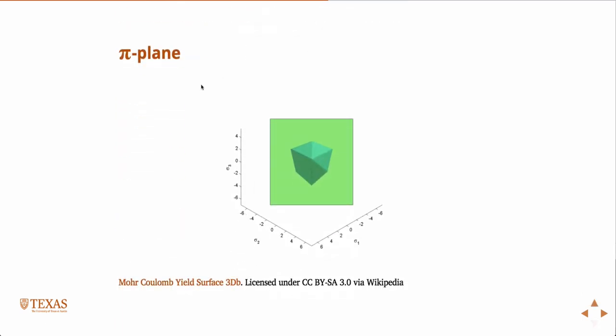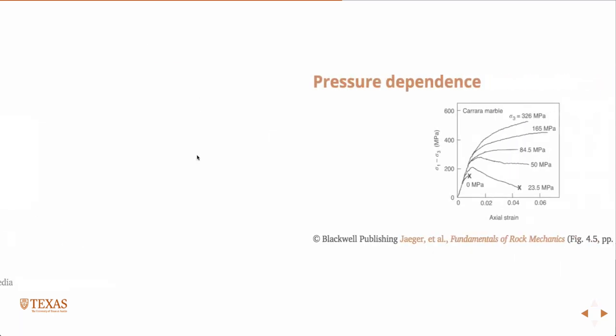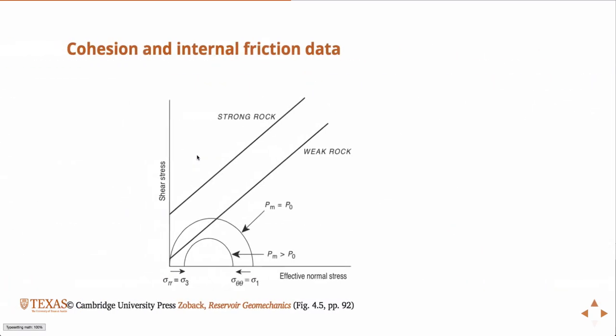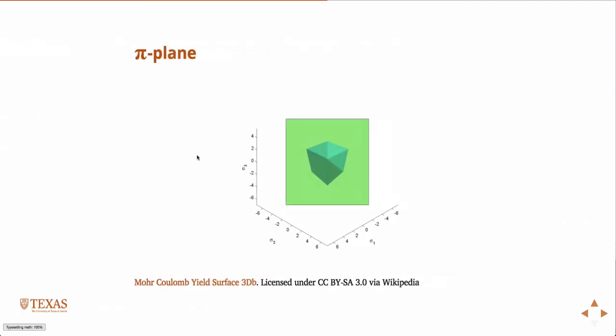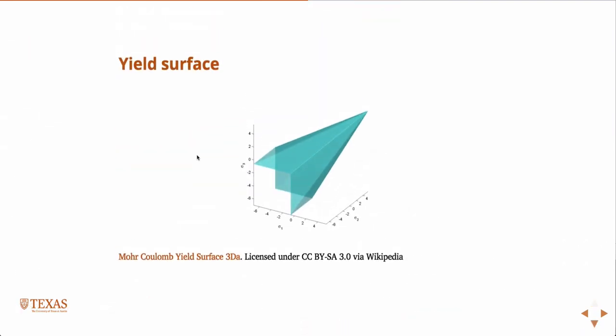This is called the pi-plane. We're looking down the axis sigma-1 equals sigma-2 equals sigma-3 — looking straight down the hydrostat — and this is what you see: that hexagonal shape. It's the same picture viewed from the end.